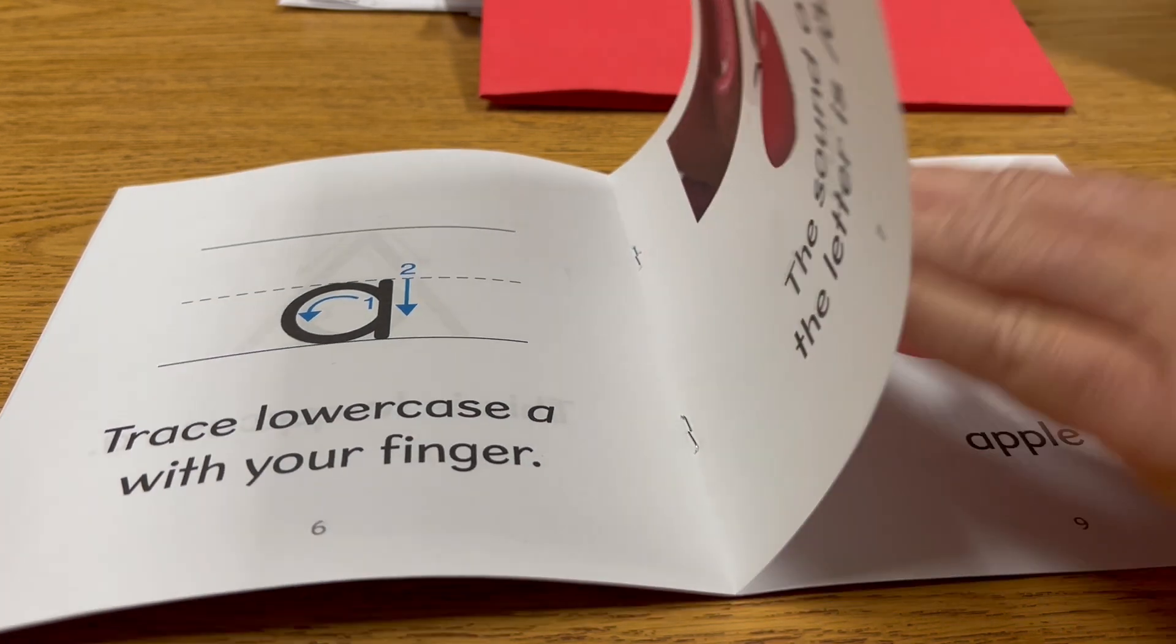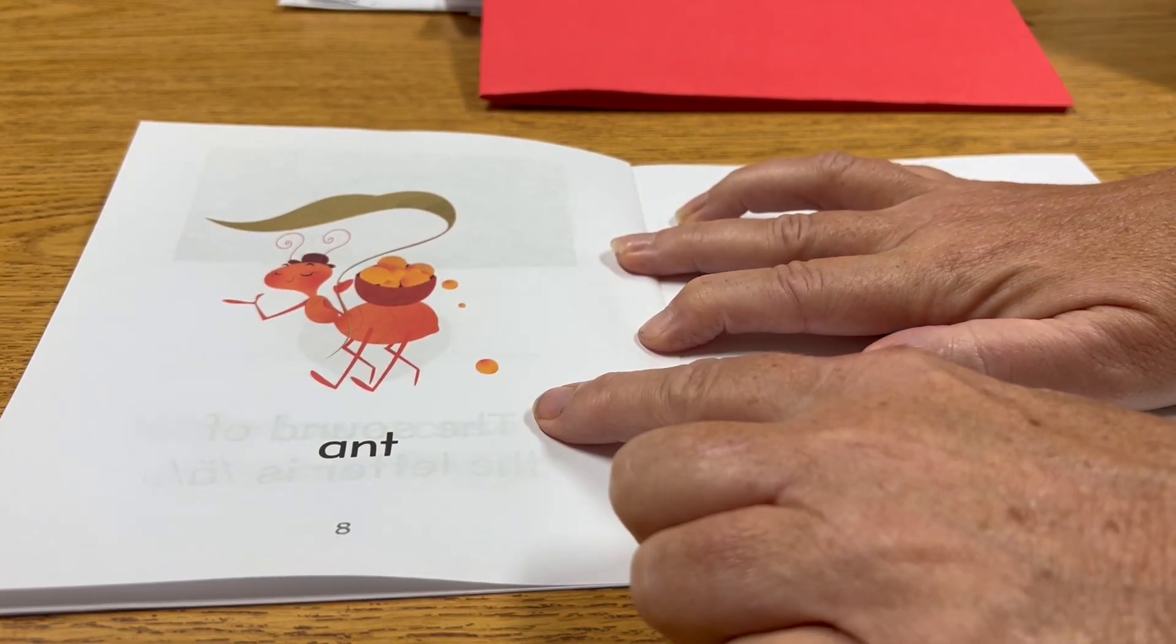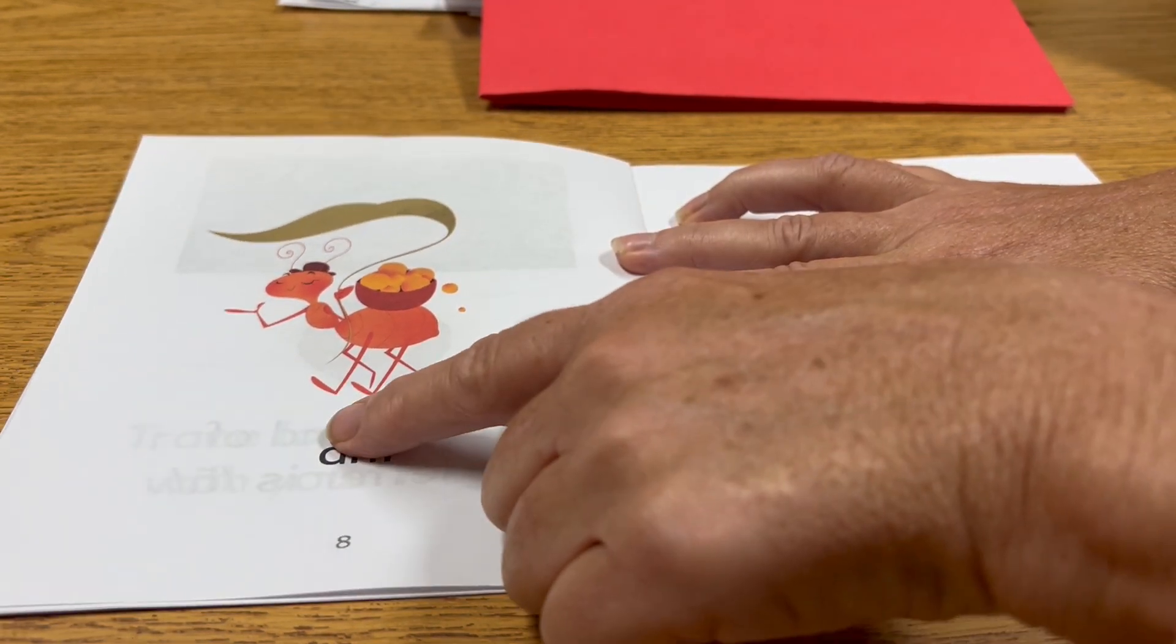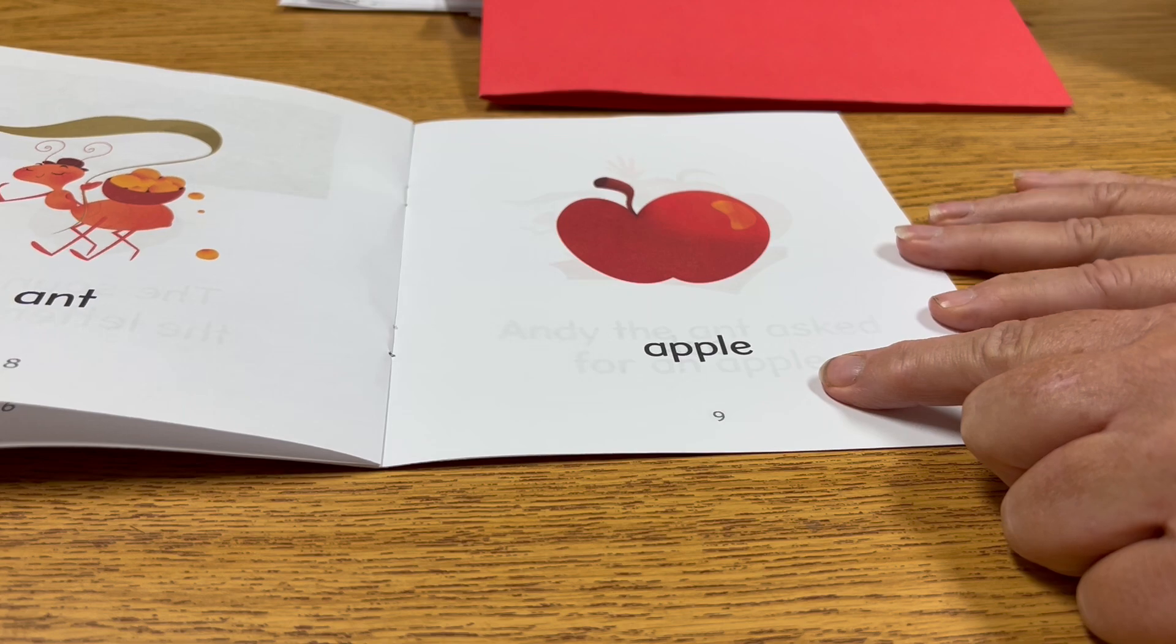A for apple. Ooh, what's that? Do you know what that is? Ant. That's an ant. And what's this a picture of? Apple.